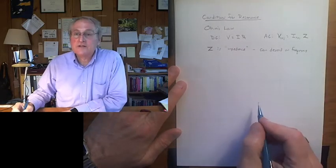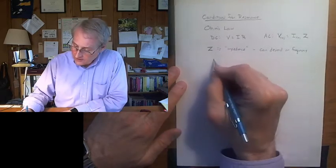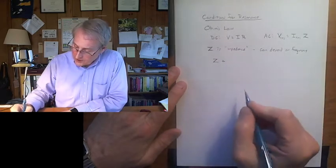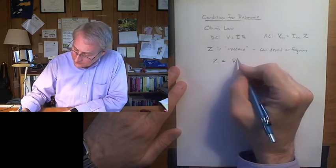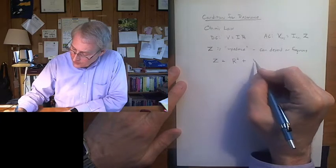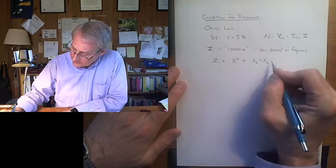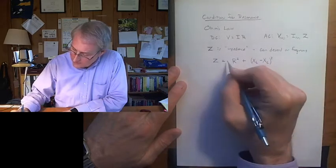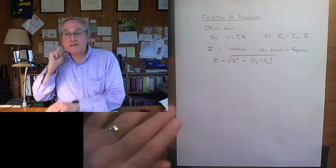Now I'm not going to derive it, but when you go through and study how AC works, the expression for Z, the impedance in a circuit is, if there's resistance, you square it. And then there's what are called reactances, the inductive reactance and the capacitive reactance squared, and we're adding them in quadrature. That's what impedance is.